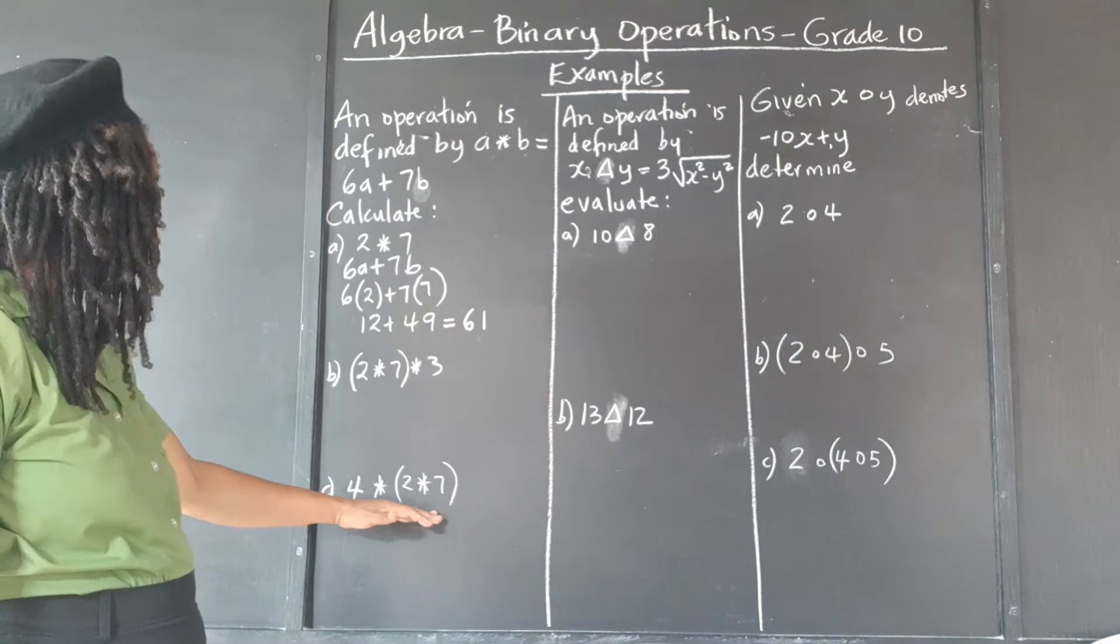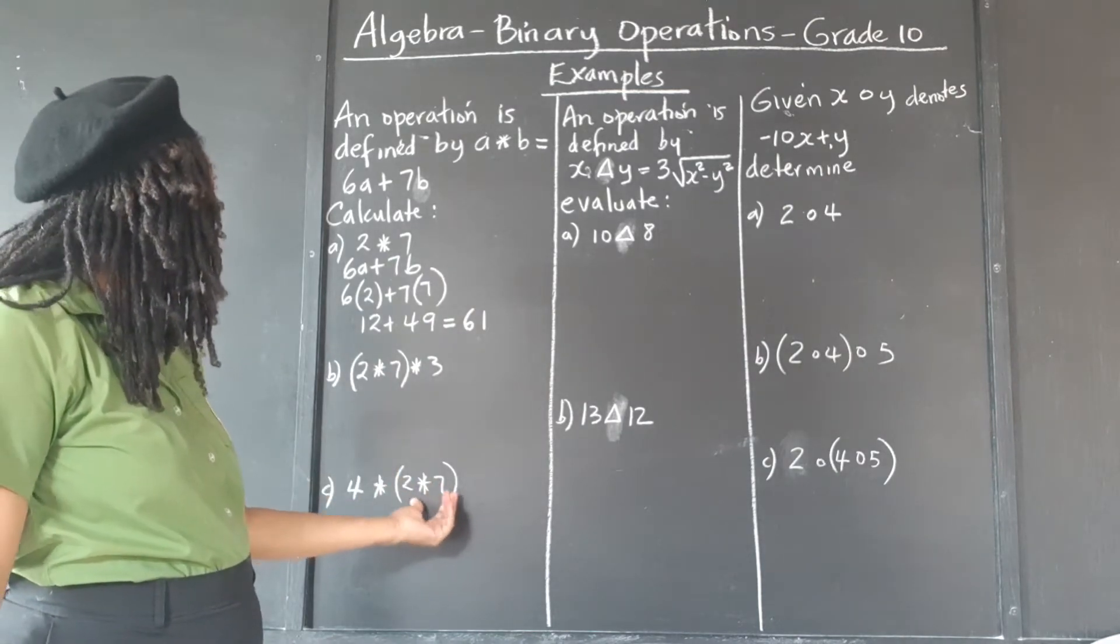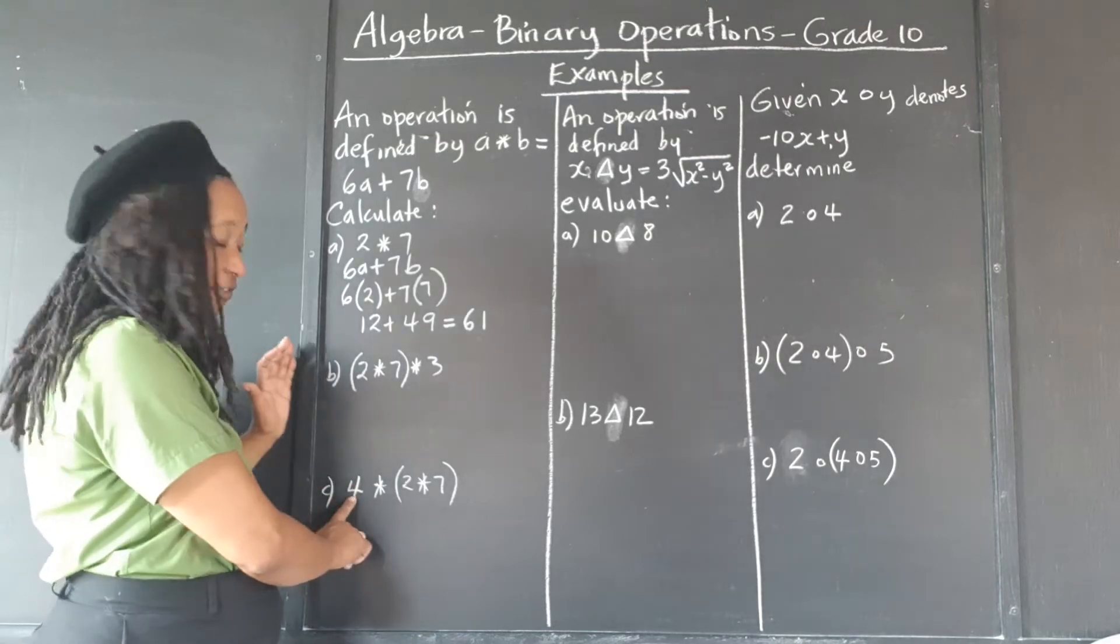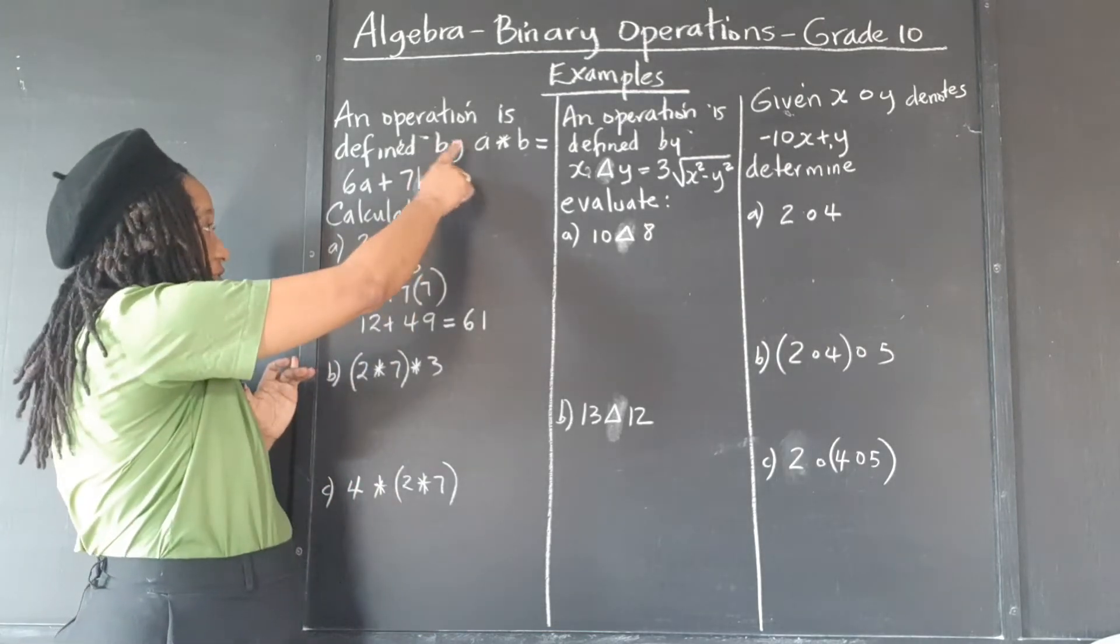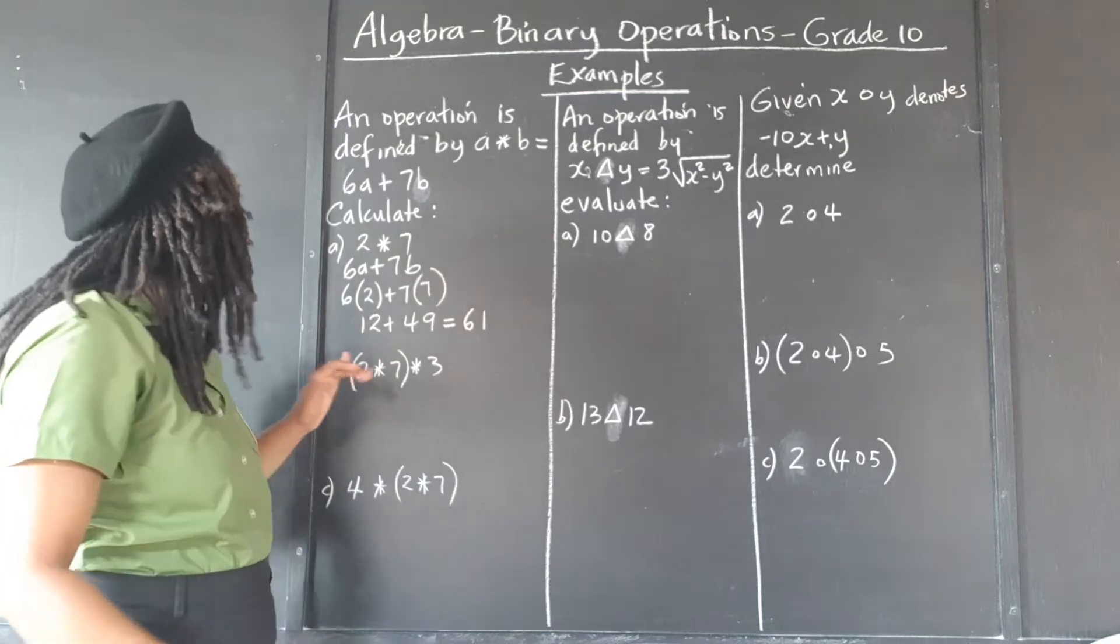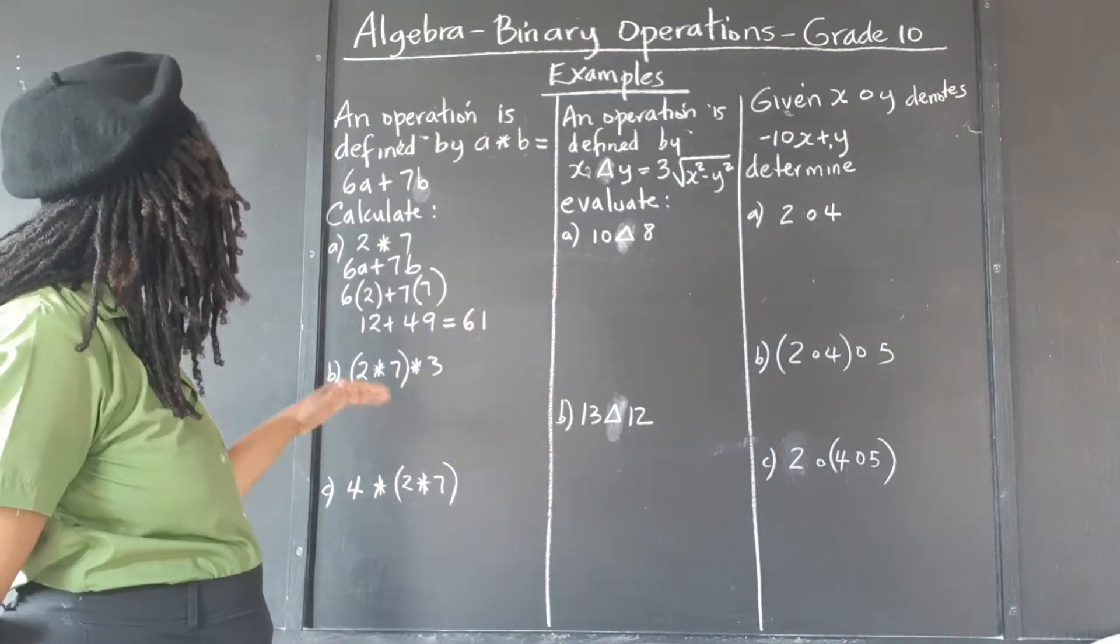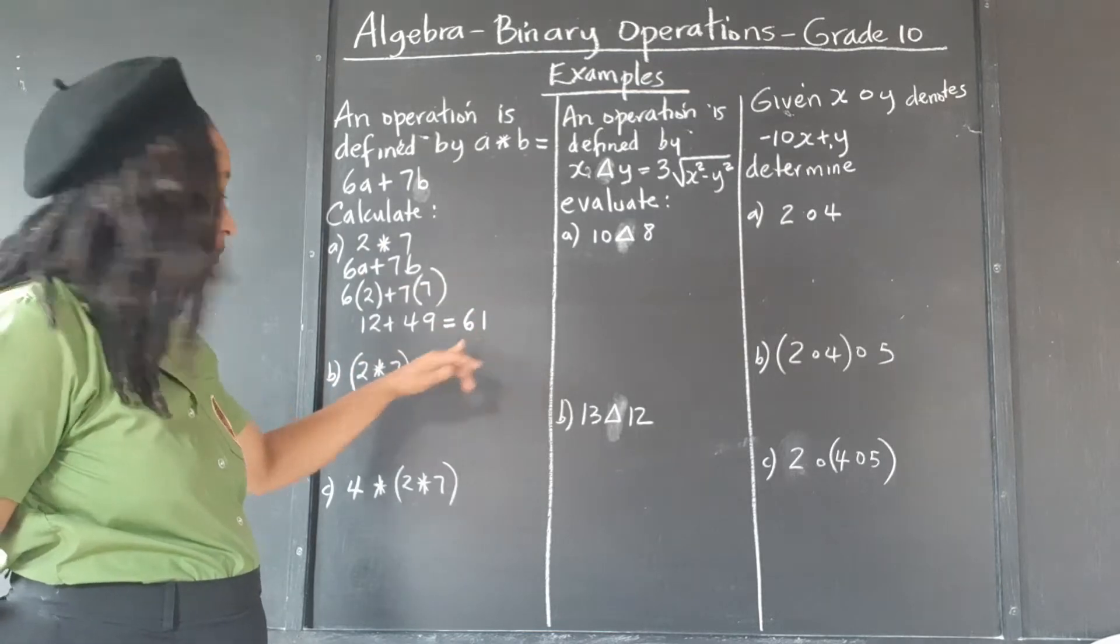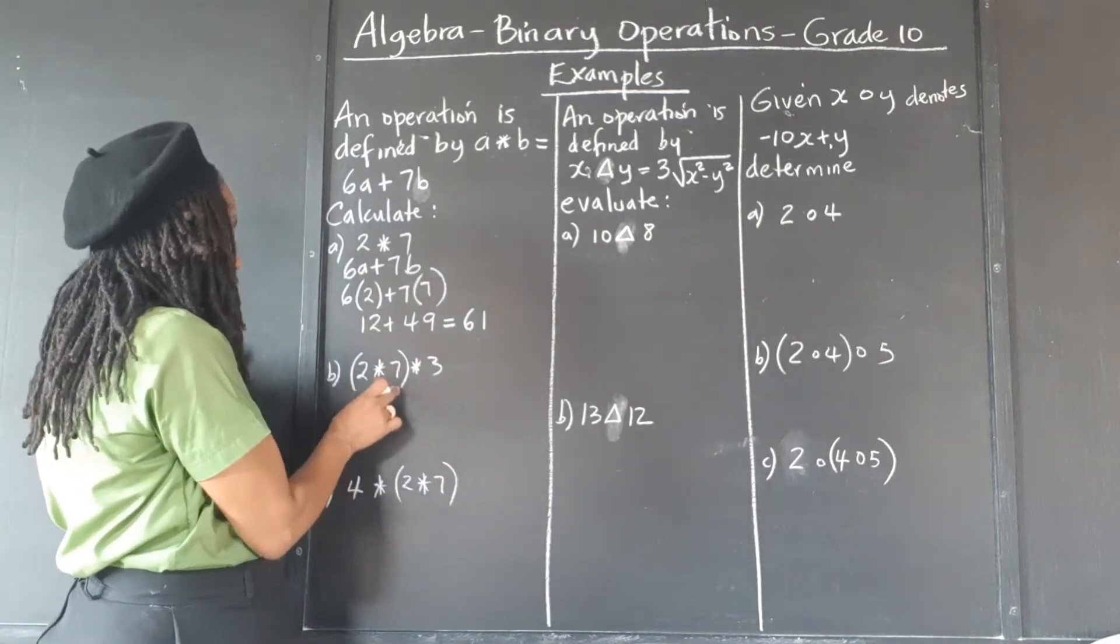Or in terms of here, when you get that answer, substitute 4 for a, and this answer for b. Whichever is given first, you substitute it in the first one, and the second one. So since we already worked out that 2 asterisk 7 produces 61, we're just going to replace this with 61.